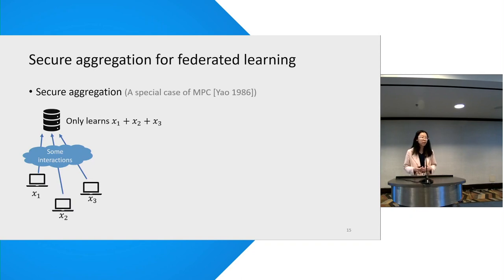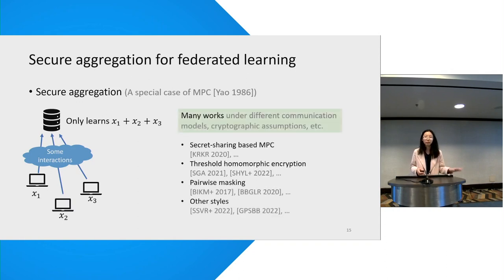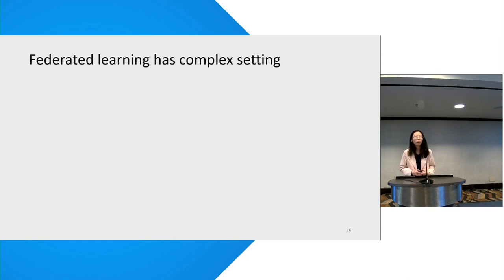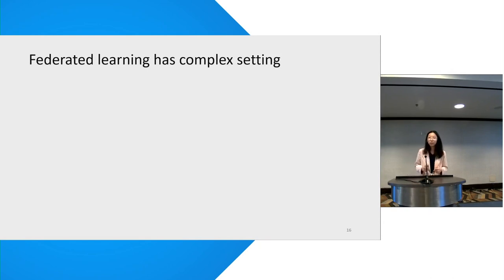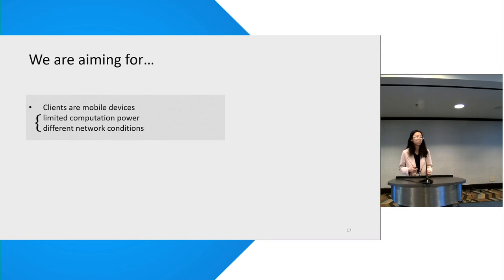Crucially, a secure aggregation protocol allows the server to compute a sum of inputs from clients without learning anything beyond the sum and what is implied by the sum. As you can see from the references here, there are many existing protocols for secure aggregation under different cryptographic assumptions and different communication models. However, applying them in a black-box way may not result in a good solution, because federated learning has many stringent constraints from both the federation property and the machine learning setting.